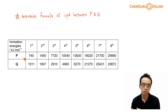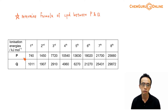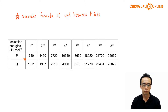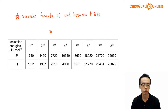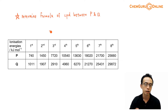Now when you're given data involving successive ionization energy, the first thing is we have to understand that successive ionization energy will always increase. Ionization energy is the energy required to overcome the attraction between the nucleus and the valence electron. So the first ionization energy, involving removing the first electron, will require the least amount of energy, because it should be the furthest away from the nucleus and the attraction should be the weakest.